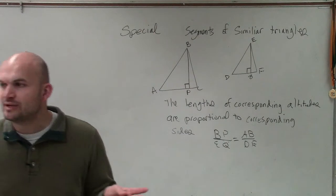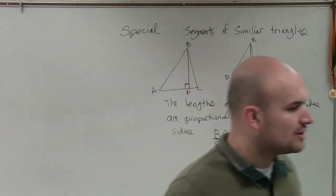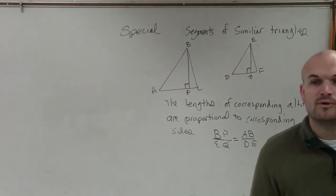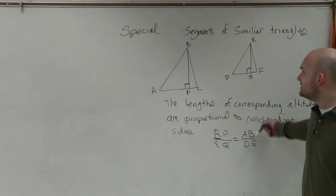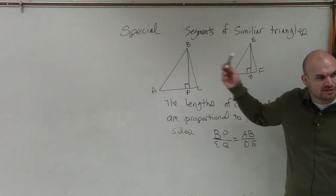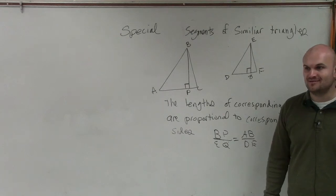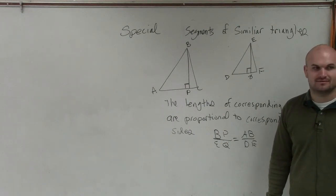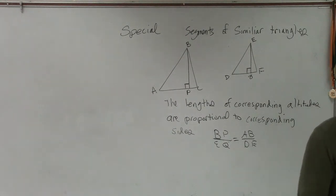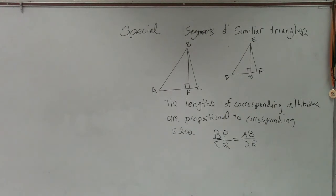So now what we can do is when we know that all the sides are similar, right, or the two triangles are similar, we know all the sides are proportional, now we can say that the altitudes are proportional as well. Isn't that cool? No? Not really? Why is that not really cool?